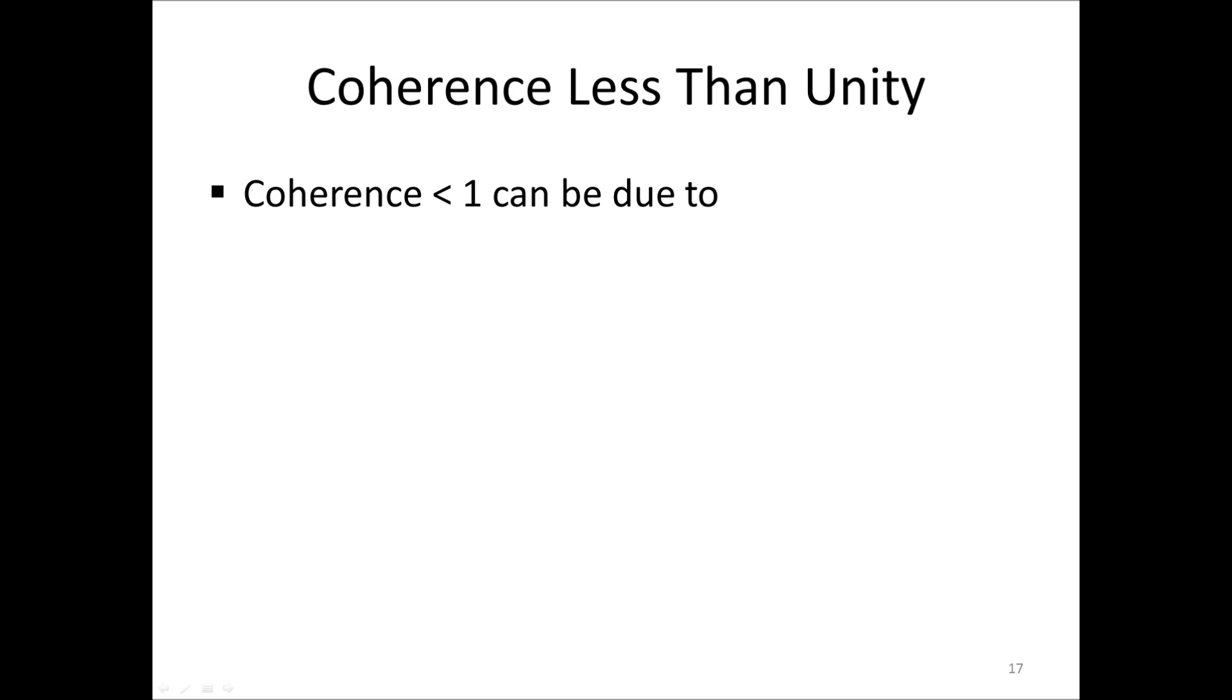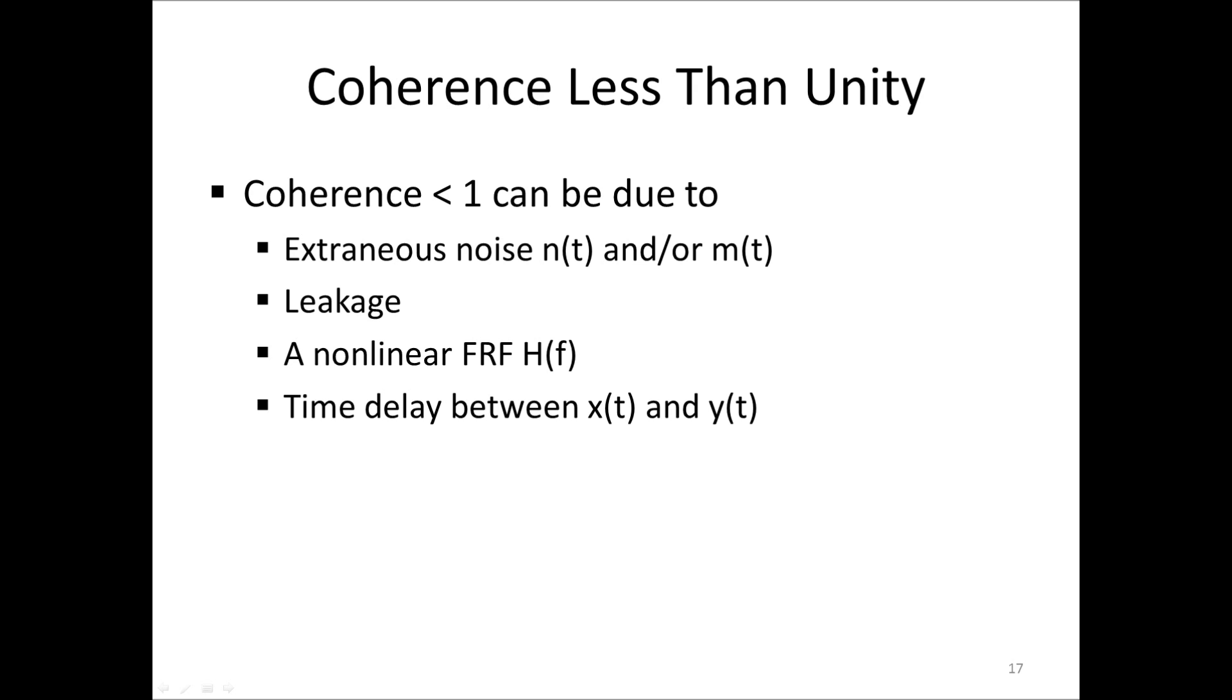If the coherence is not unity, there can be several reasons for that. The first and most obvious is that there is noise on the input or output signals, or both. Note that you cannot know from the coherence function itself if the noise is in N or M, or both. Another reason for a coherence less than 1 is leakage. Another obvious reason is that the system between X and Y is simply not linear. Then, naturally, there will not be a linear relationship that fully explains Y from X. And finally, although not that common in vibration analysis applications, there could also be a time delay between the signals X and Y.